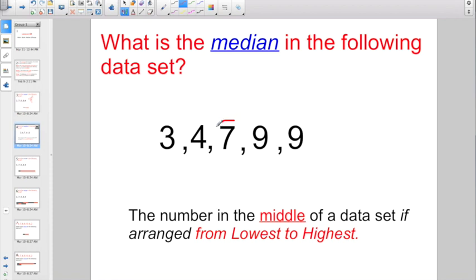So, now that I have the numbers in order from least to greatest, lowest to highest, our number in the middle is easy to see. Our median is 7, right? The number in the middle when you order them from least to greatest.